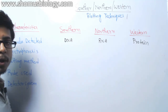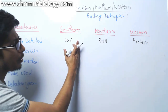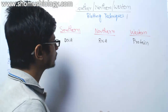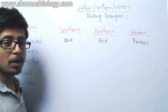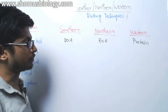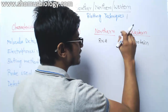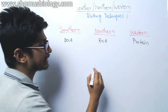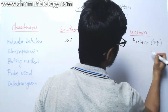Among these three blotting techniques, southern blotting and northern blotting are very similar because they deal with DNA and RNA. Western blotting is different from southern and northern blotting, and western blotting is the most sensitive among the three.